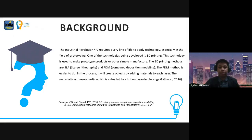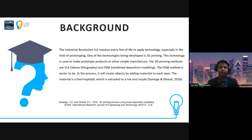One of the technologies being developed is 3D printing. This technology is used to make prototype products or other simple manufacturing. The 3D printing methods are SLA (stereolithography) and FDM (fused deposition modeling). The FDM method is easier to do; in the process it creates objects by adding material to each layer. The material is thermoplastic which is extruded through a hot-end nozzle.